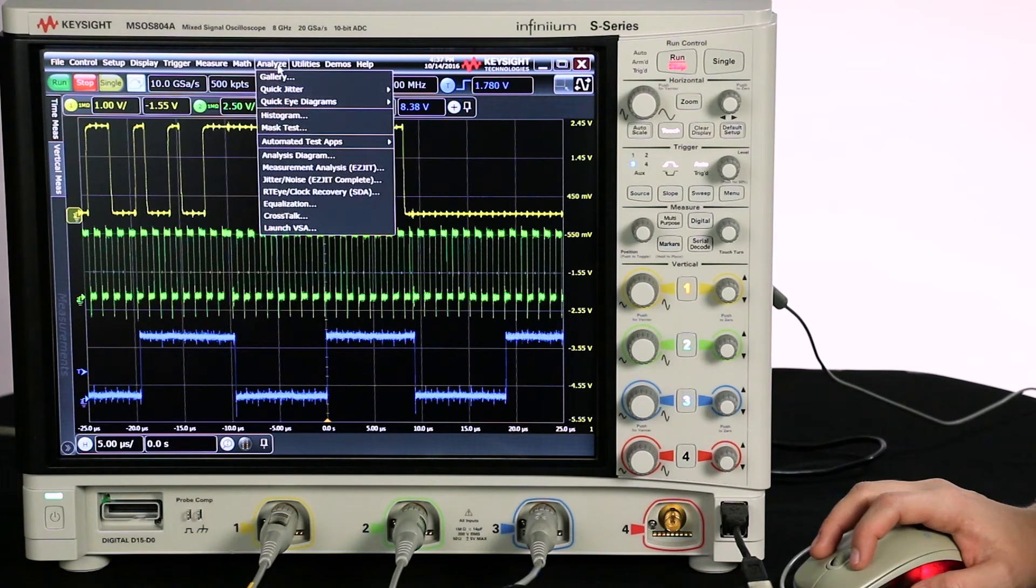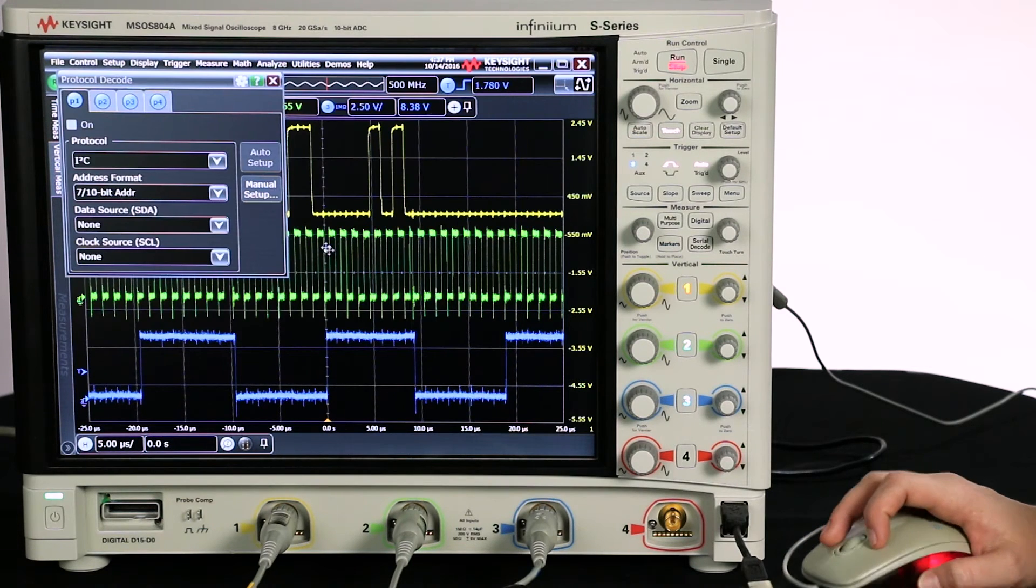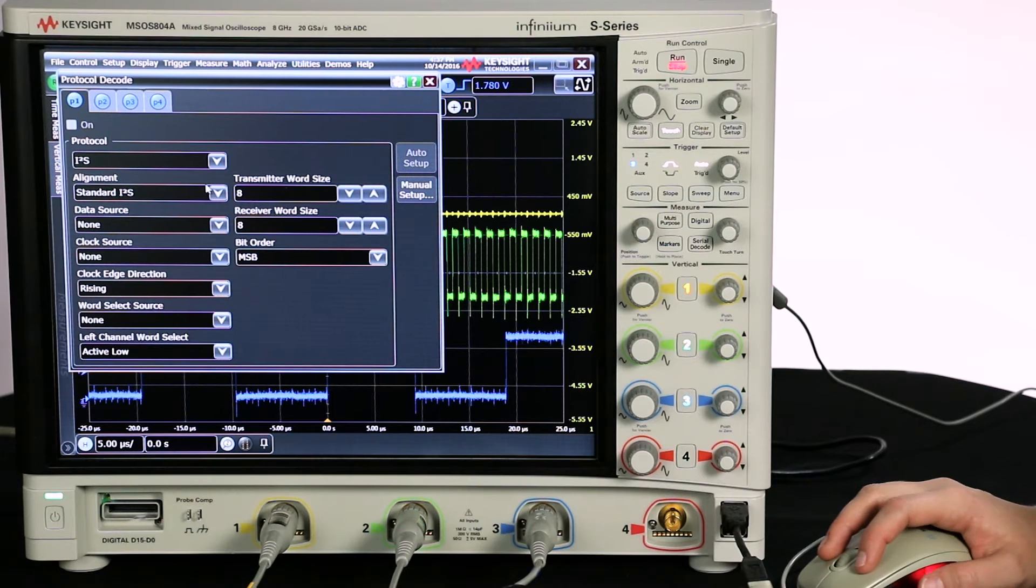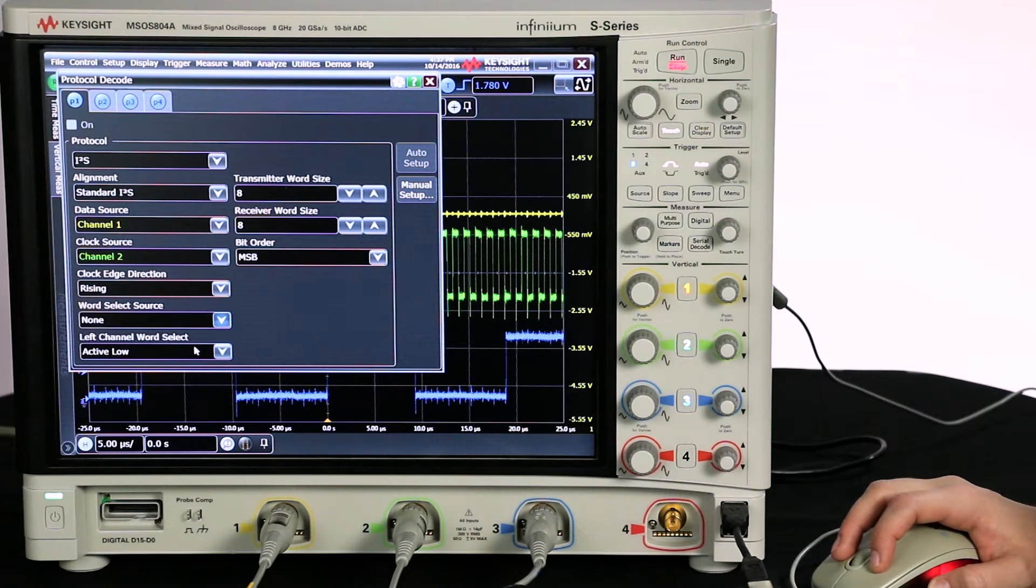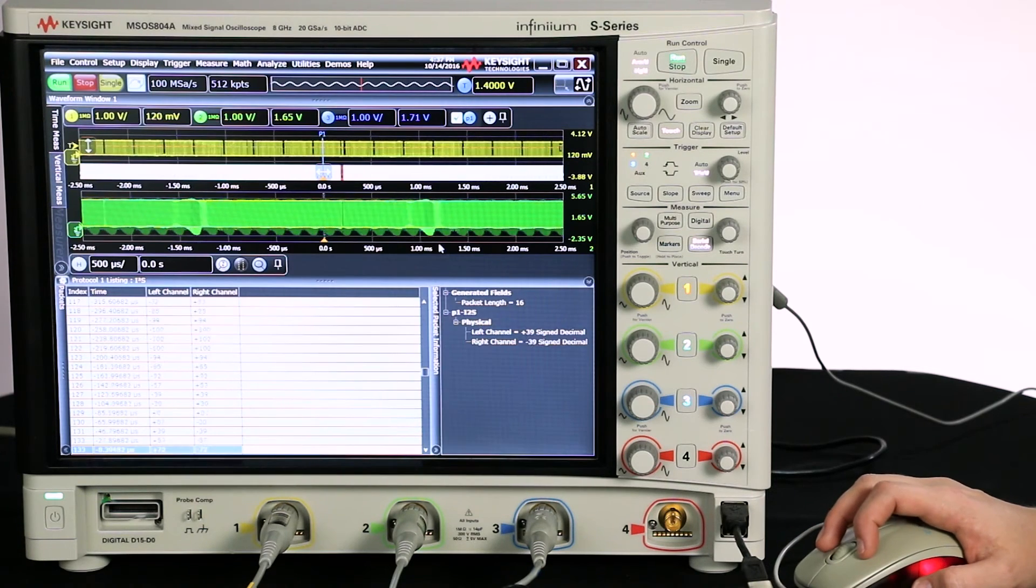So let's go up to the analyze menu, click gallery, we'll scroll down to protocol decode, and we'll go to I Squared S. Now we've got channel 1 is our data source, our clock source is on channel 2, and our word select is on channel 3. So now I'm going to click auto setup, and just like that we're decoding.